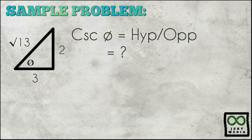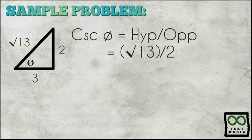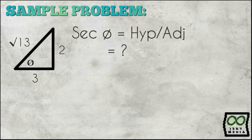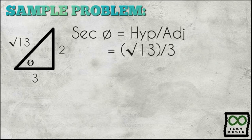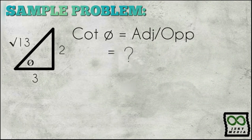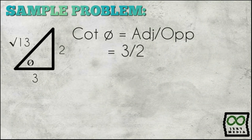For cosecant theta — hypotenuse over opposite — the ratio is square root of 13 over 2. For secant theta — hypotenuse over adjacent — the ratio is square root of 13 over 3. For cotangent theta — adjacent over opposite — the ratio is three halves.